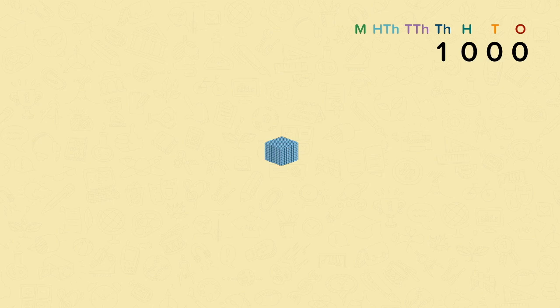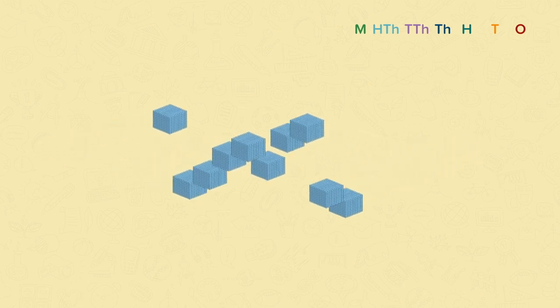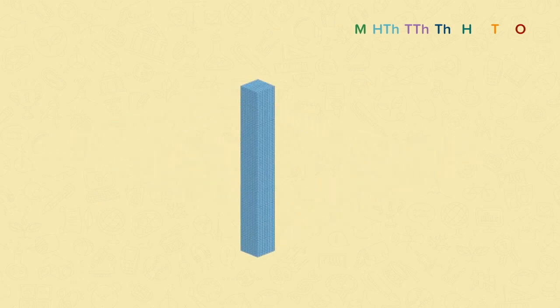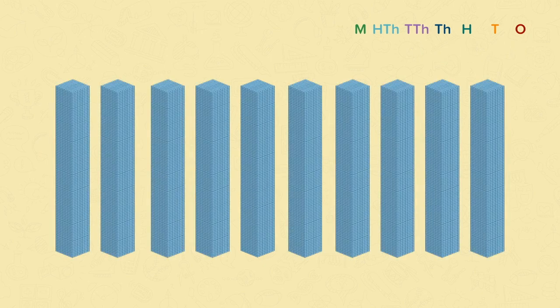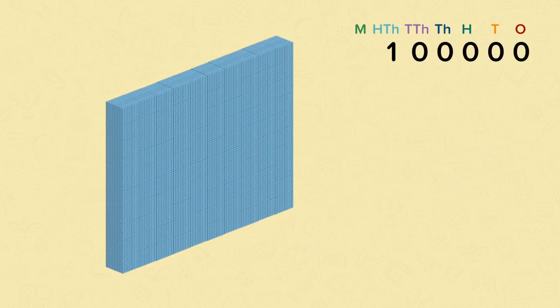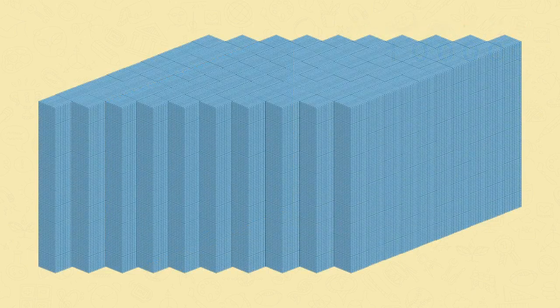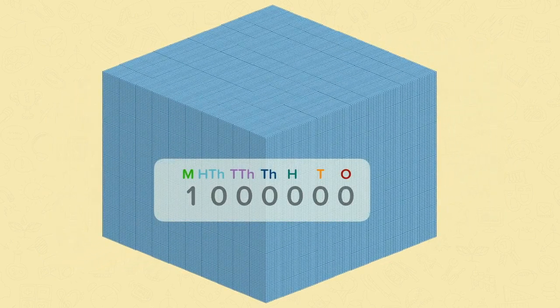Now we'll just shrink our thousands cubes to help us visually understand the value of ten thousand. Ten thousand is ten thousand. And ten ten-thousands is one hundred thousand. And finally, ten hundred-thousands is one million.